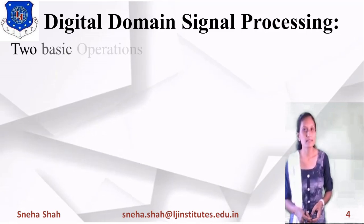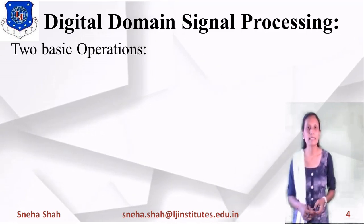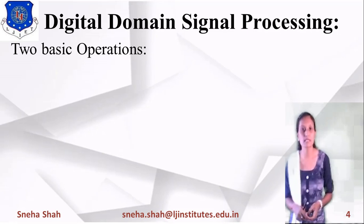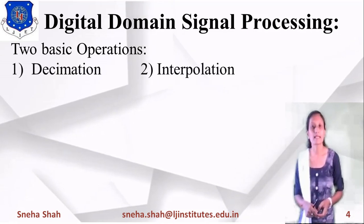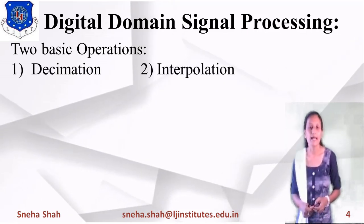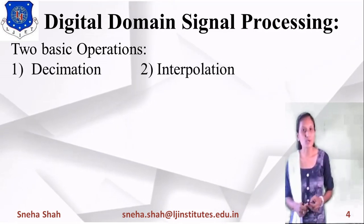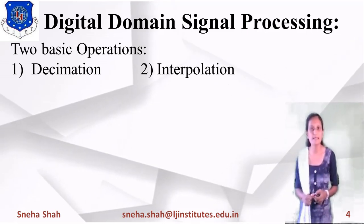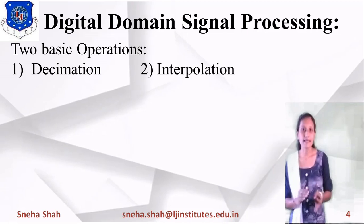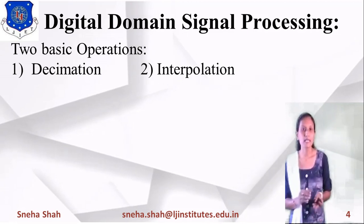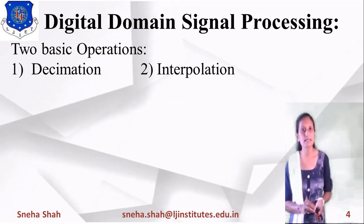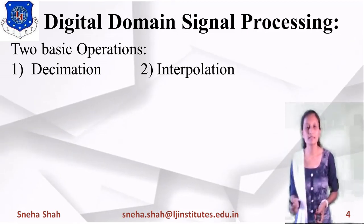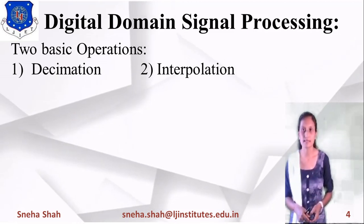In digital domain signal processing, there are basically two operations: decimation and interpolation. Decimation is also called down sampling, and interpolation is called up sampling. We directly convert the original digital signal into up-sampled or down-sampled versions using digital domain signal processing.